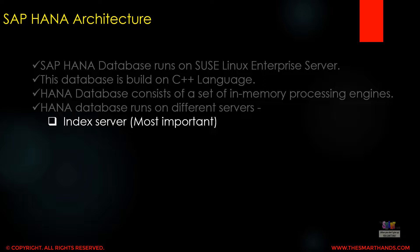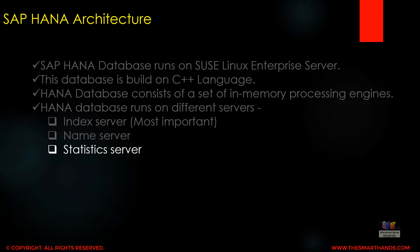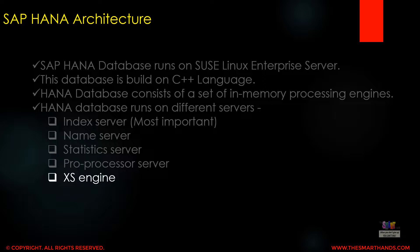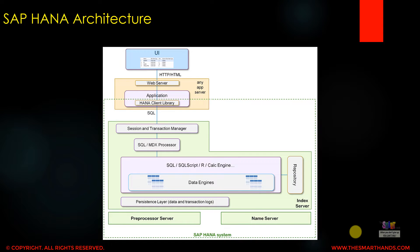Among these layers, the first one is the index server, which is the most important one. Then we have the name server, the statistics server, the processor server, XS engine — and that's all.